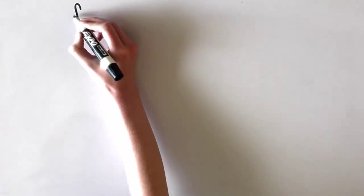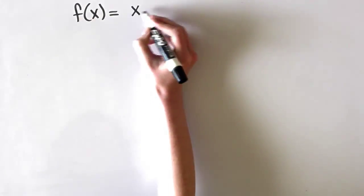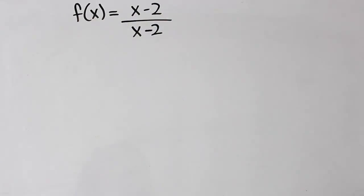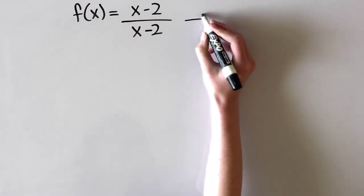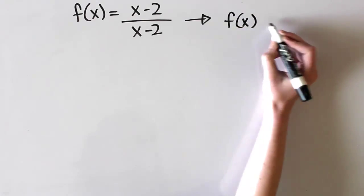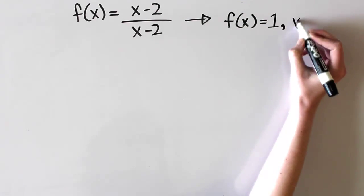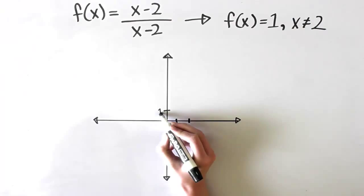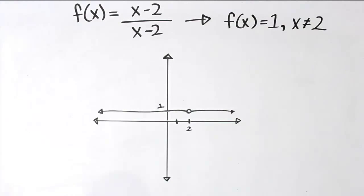Let's begin with the function f of x equals x minus 2 over x minus 2. Now this simplifies to just f of x equals 1, but there's a discontinuity where x equals 2 because there's a hole, meaning the graph is going to look something like this. Because there's this hole at x equals 2, f of 2 is undefined.